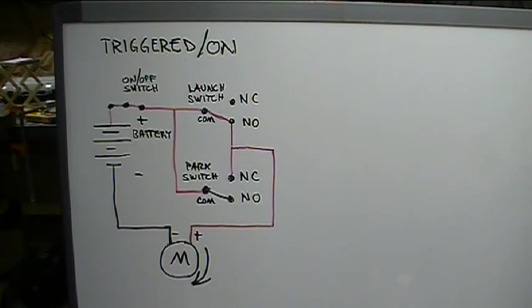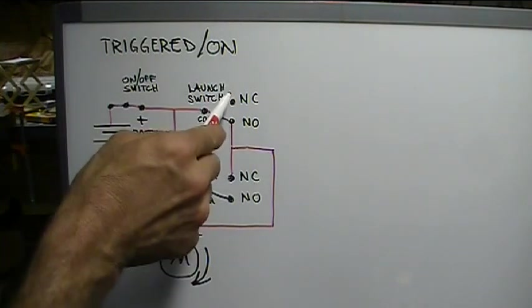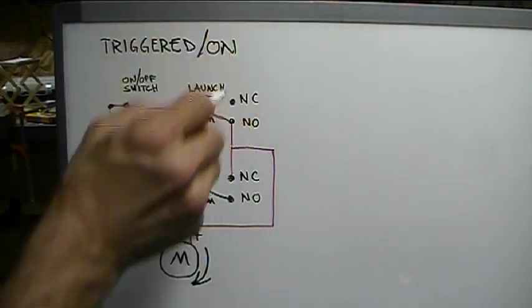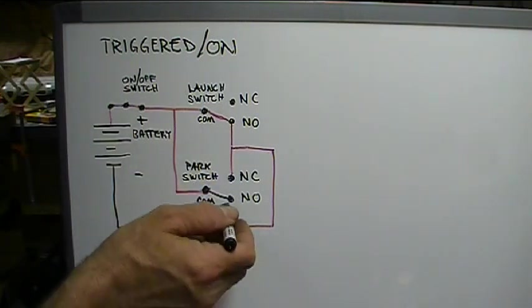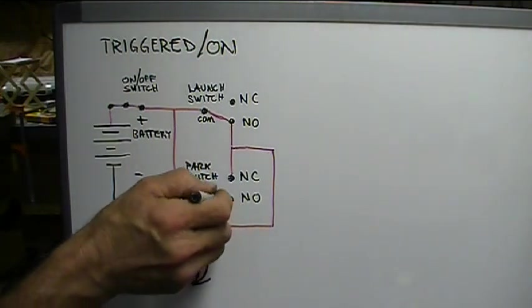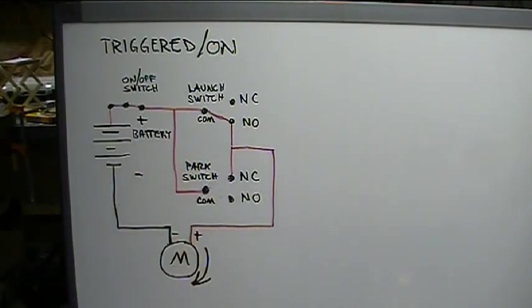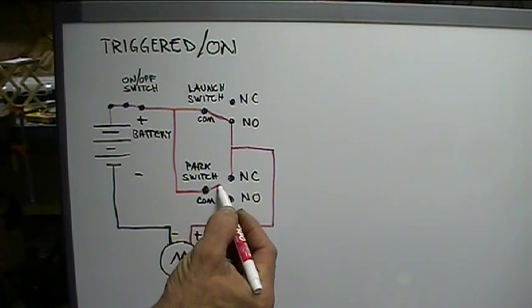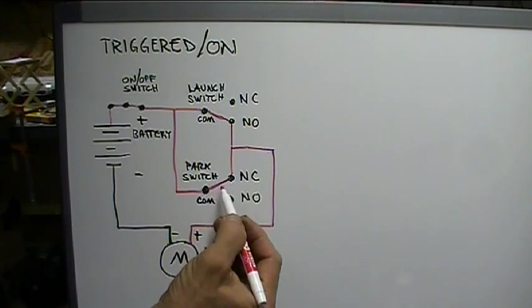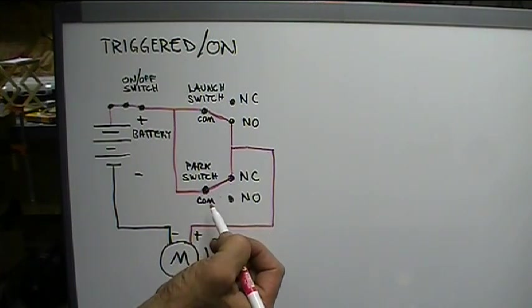Now, as the motor begins to spin, the ball is still sitting here. Our ball is here pushing on the switch until it gets launched. But the motor has begun to spin. So now it has rolled off from the cam that's acting upon the park switch. Once that happens, the park switch moves to the other position, normally closed. Nothing is acting upon it. So it goes normally closed. So now it has continuity between the common and the normally closed.